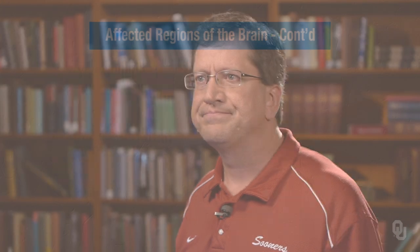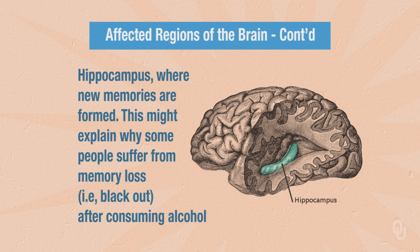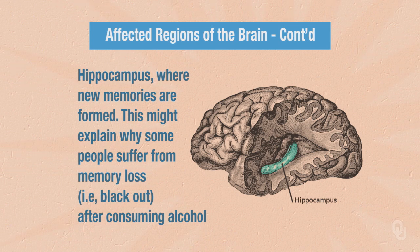The hippocampus is another region of the brain that is affected by alcohol. Specifically, the hippocampus is where new memories are formed. This might explain why some people suffer memory lapses — for example, you've perhaps heard the term 'blacking out' after consuming alcohol.